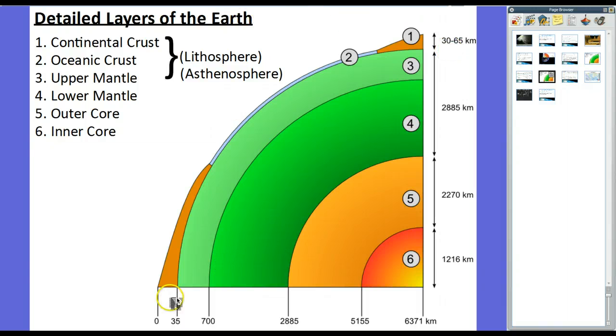So let's go ahead and let's look at our detailed layers of the Earth. So 35 kilometers thick is the Earth's crust. 35 to 2585 is the Earth's mantle. And then the rest of the way, so 2270 is the core, and 1216 is the inner core, to give 6,371 kilometers as the radius of the Earth. So from the exact center of the Earth all the way out to the outermost point of the crust, that is the radius of the Earth. So let's talk about this magnetic field.